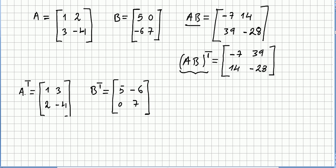So now we take the transpose of A, that would be 1, 3, 2, -4, and we take the transpose of B. So the transpose of B will be 5, -6, 0, 7.